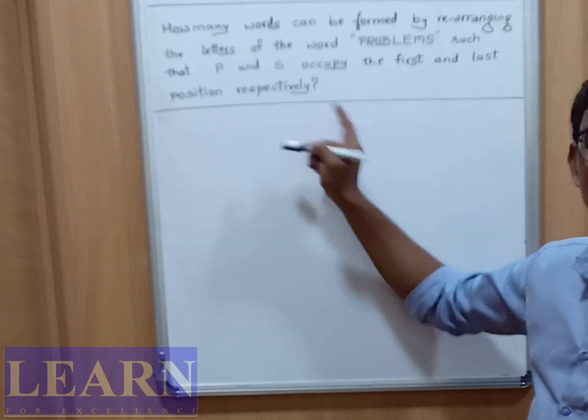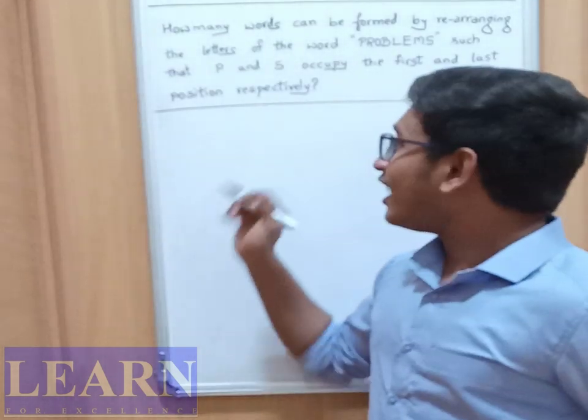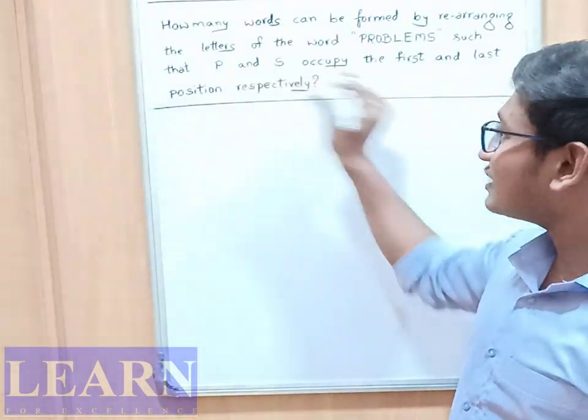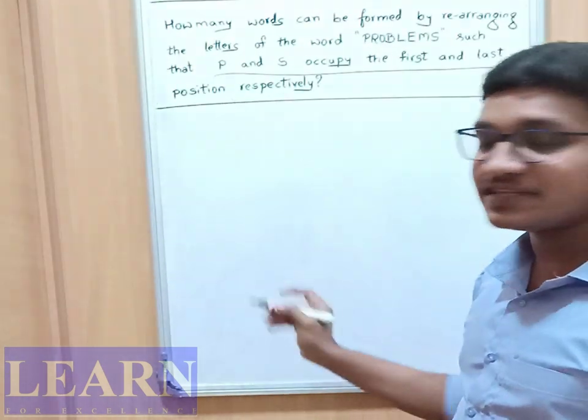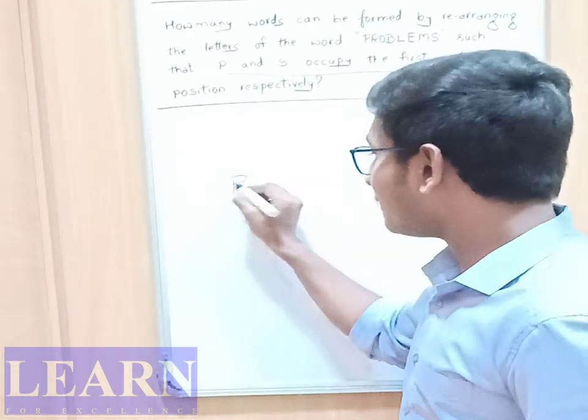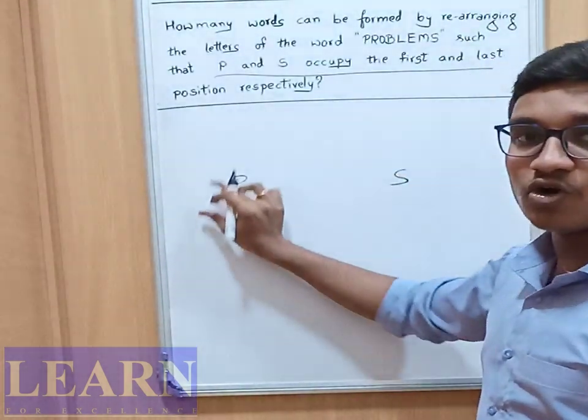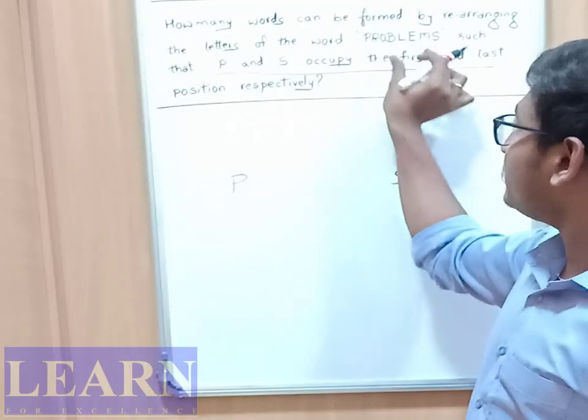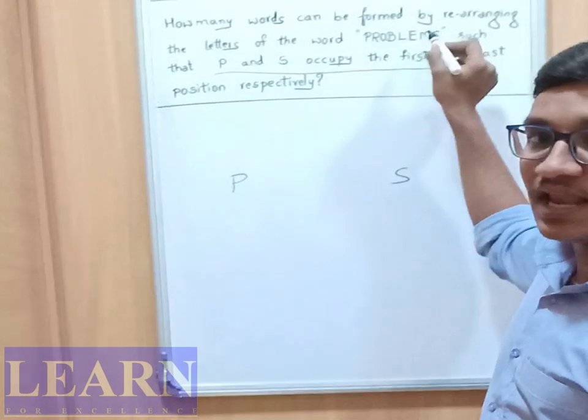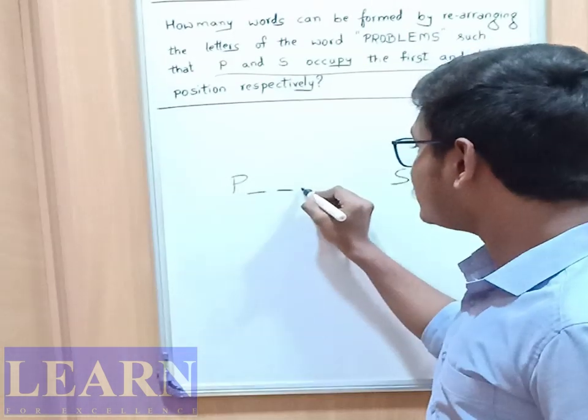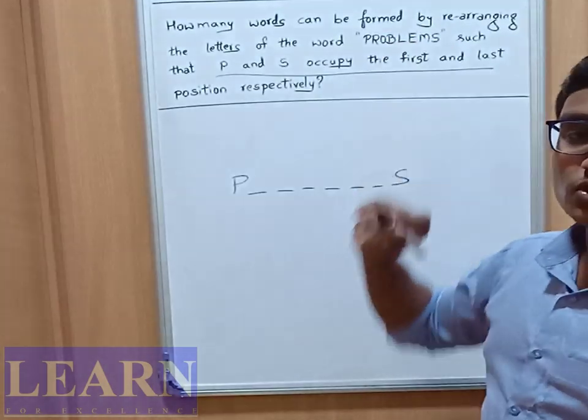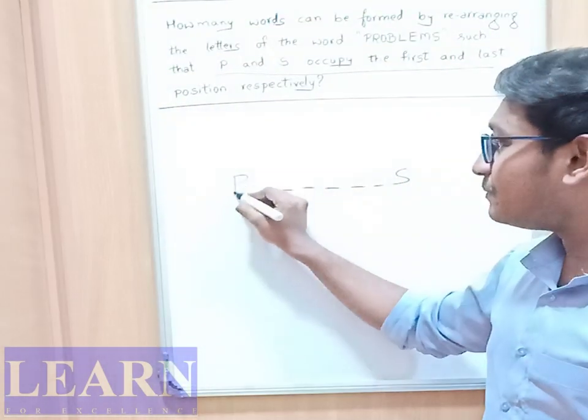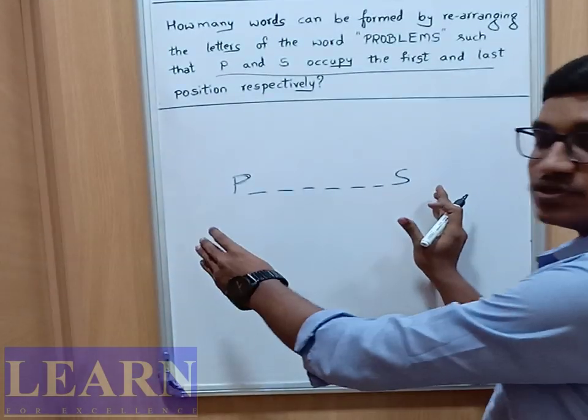After seeing this question, we came to know that B and S occupy the first and last positions respectively, which means here P and S occupy the first and last positions. In between, R, O, B, L, E, M - we need to arrange these letters. See here how many letters are there: R, O, B, L, E, M - total six letters. We know that P and S are in the last positions; these are fixed.